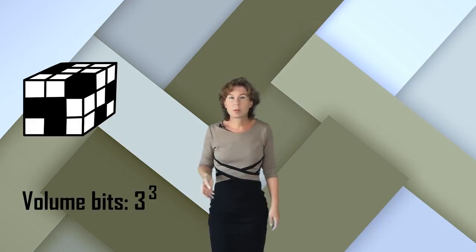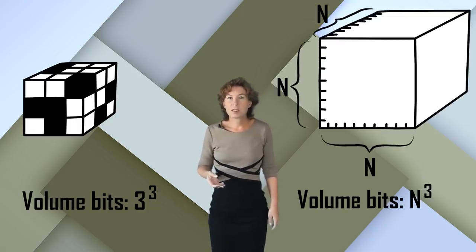Take a cube that is made of smaller cubes, each of which is either black or white. You can think of each small cube as a single bit of information. How much information is in the large cube? Well, that's the number of the smaller cubes, so three cubed in this example. Or if you divide every side of the large cube into n pieces instead of three, that's n cubed.